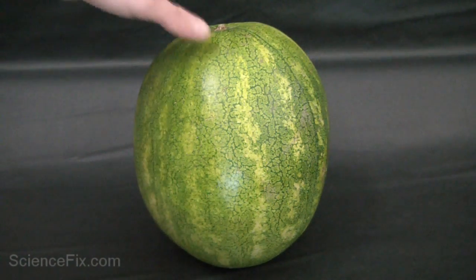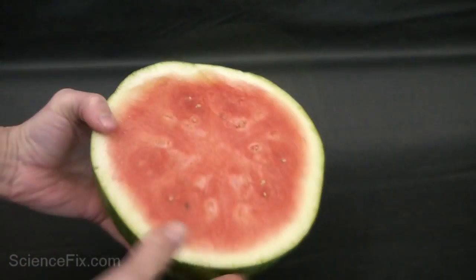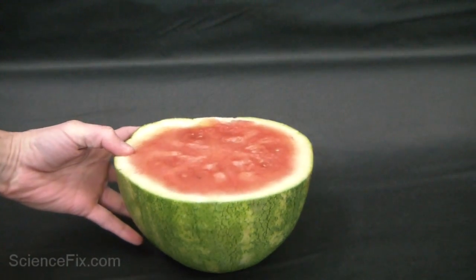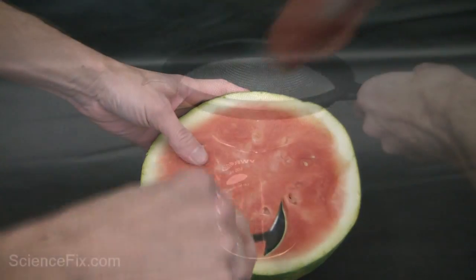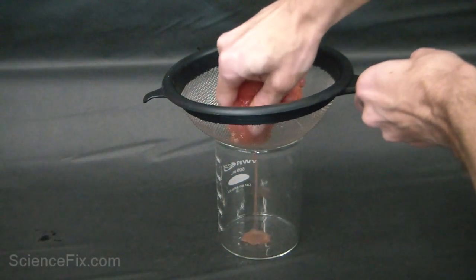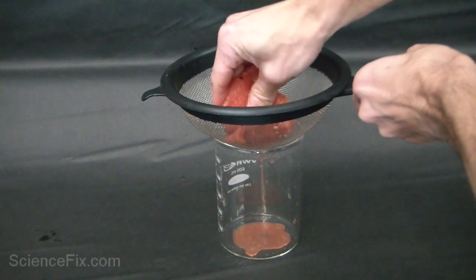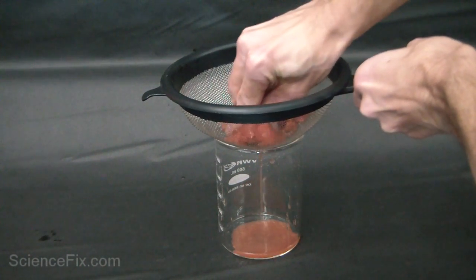Taking a watermelon and we're going to scoop out some of the inside of the watermelon and then we're going to take some of that inside and strain it through a strainer to get the juice. We want the flavorings of the juice and the liquid from the watermelon.